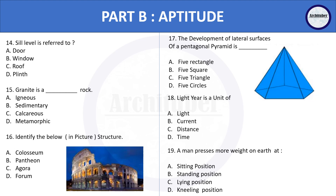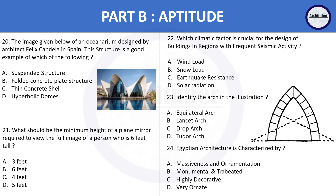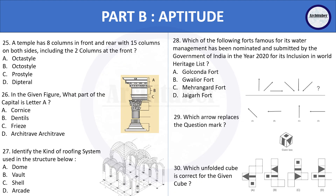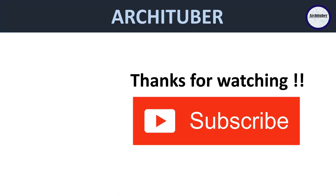The options for the pentagonal pyramid lateral surface development are: five rectangles, five squares, five triangles, or five circles. Whenever you are answering any question, read it twice or thrice. We also have construction-related and climatology-related questions to solve. We have discussed these quite a few times now, and with that we have covered Mock Test 5.